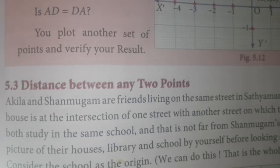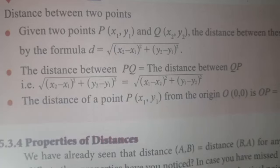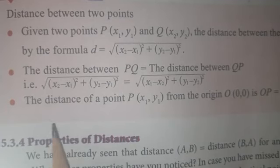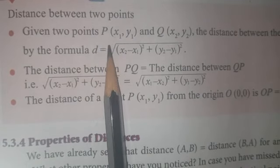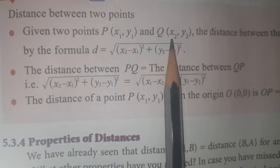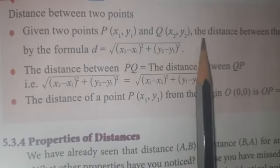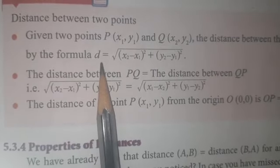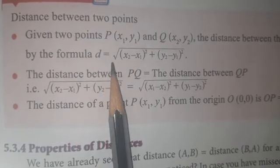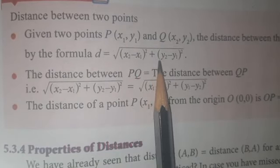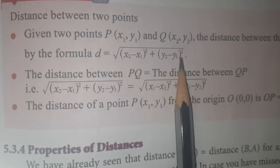We are going to see the new topic: the distance between any two points. The formula for the distance between two given points P(X1, Y1) and Q(X2, Y2) is: D, where D means distance, is equal to the square root of (X2 minus X1) whole square plus (Y2 minus Y1) whole square.